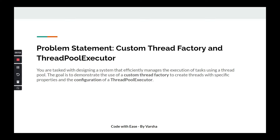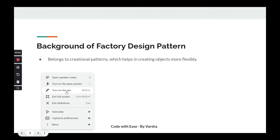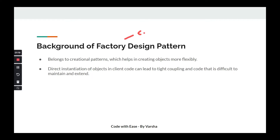Let's go back to the factory design pattern. It belongs to the creational pattern category. As per the Gang of Four patterns, there are three types broadly: creational, structural, and behavioural. Factory design pattern and builder design pattern are part of creational patterns. It helps us create objects more flexibly by centralizing object creation. When you have client code and don't want to expose which class OBJ1 and OBJ2 belong to, directly instantiating objects leads to tight coupling, which is difficult to test, maintain, and extend.